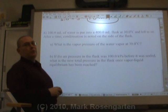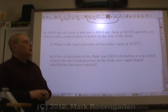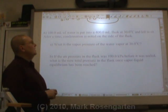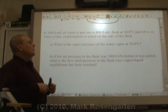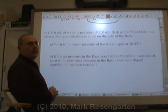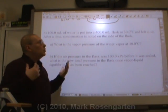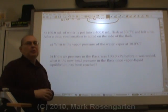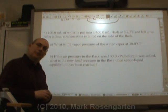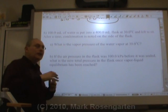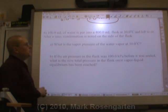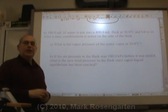100.0 milliliters of water is put into a 400 milliliter flask at 30 degrees Celsius and left to sit. After a time, condensation is noted on the side of the flask. Okay? In other words, you've reached vapor-liquid equilibrium, which is the point at which you can measure the vapor pressure of that trapped liquid. First of all, what is the vapor pressure of water vapor at 30 degrees Celsius?